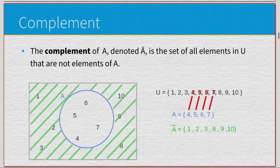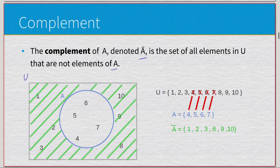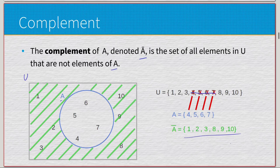Moving on, we have complement, which is noted similarly to negation — just a bar over the top. It represents all elements in a universal set that are not elements of A. If the universal set is {1 through 10} and set A is {4, 5, 6, 7}, we take the universal set and remove the elements from A, ending up with {1, 2, 3, 8, 9, 10}. On the Venn diagram, it's everything in the universal set that's not in set A.